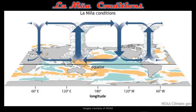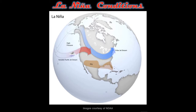During a La Niña event, cooler waters pool up along the eastern side of South America and warmer waters move further west into Indonesia. This shift causes warmer temperatures and increased rainfall in parts of Asia, Indonesia, and Australia — it's essentially the opposite of an El Niño event. The effects on the U.S. during La Niña tend to be opposite those of El Niño, with less rainfall and harsher winters. A shift in the jet stream tends to steer severe weather to the north. Atlantic hurricanes are typically more common and more intense during a La Niña season, while the Pacific coast of North America typically sees fewer hurricanes during this time.